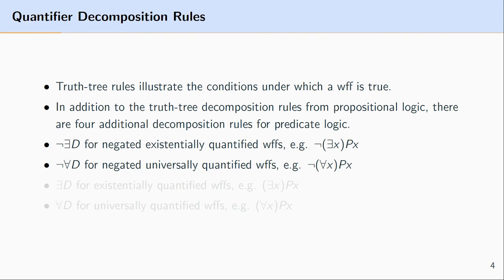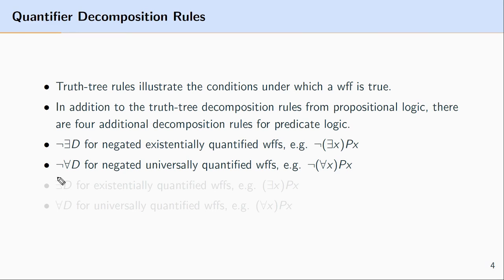The next rule is negated universal decomposition, abbreviated as 'not upside-down-A D' — that is, not universal D. This rule applies to negated universally quantified well-formed formulas, where the main operator is negation and the operator with the next most scope is the universal quantifier. If you see a formula of this form, you apply the negated universal decomposition rule.